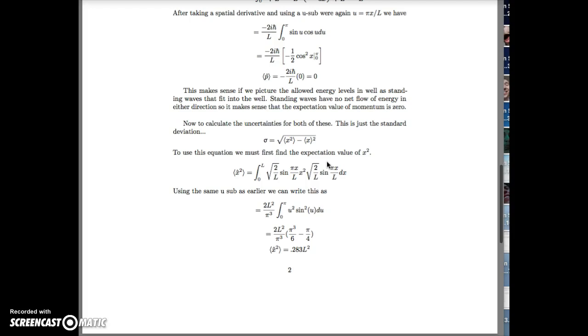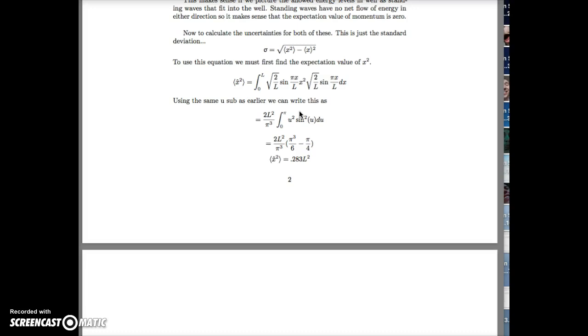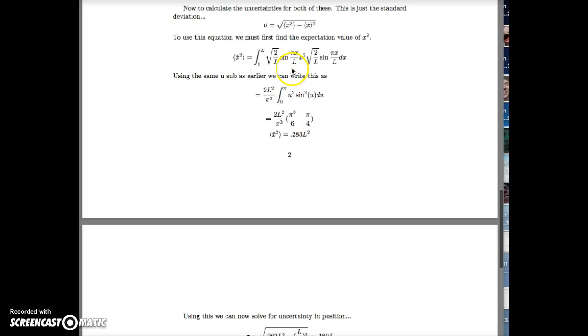Now to calculate the uncertainties for both quantities. This is just the standard deviation, which is defined as this. To use this equation, we must find the expectation value of x squared. Using the u-substitution we used earlier, we can write this as this. And we find that the expectation value of x squared is 0.283 L squared.